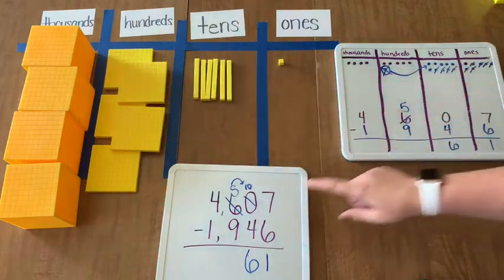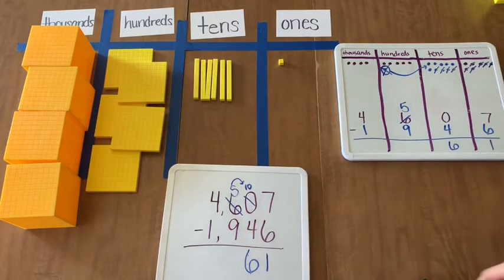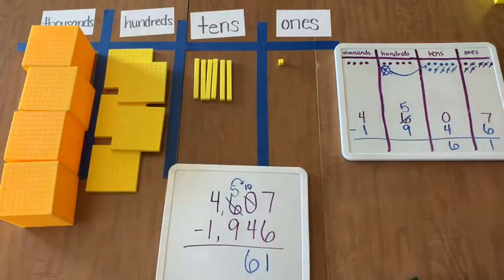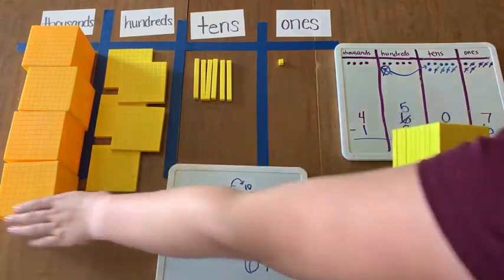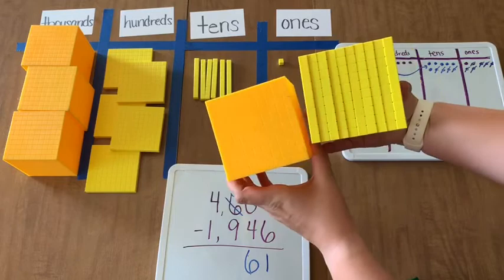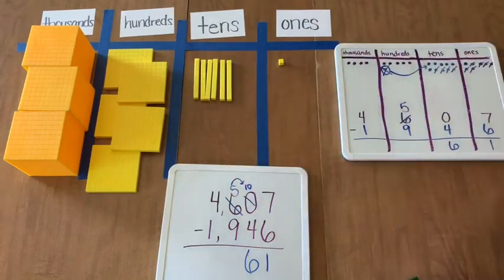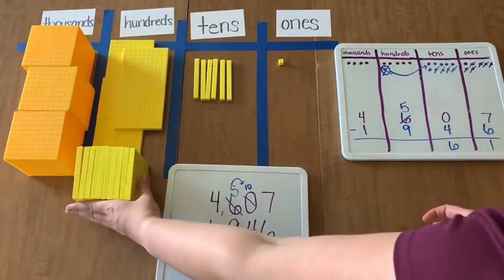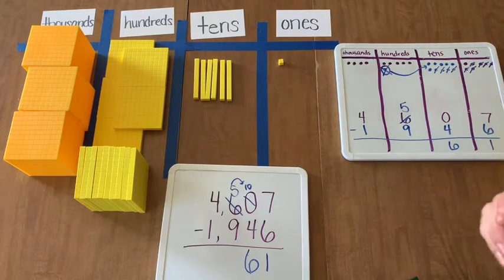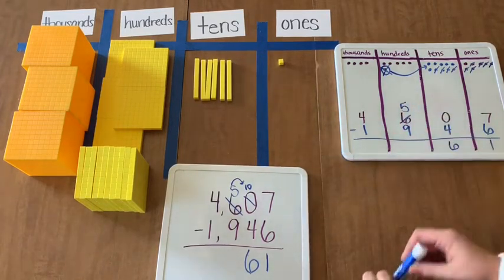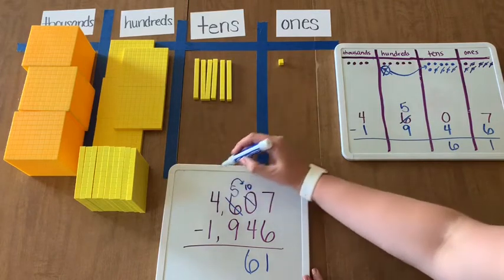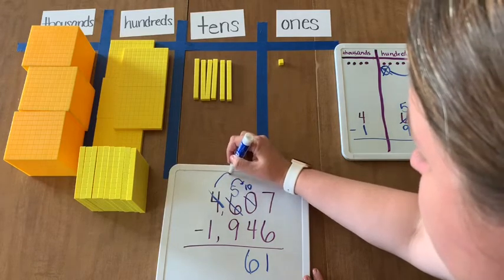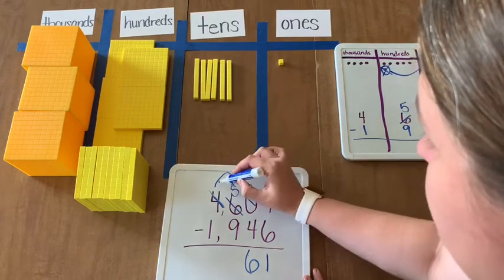In the hundreds, we cannot take away 9 hundreds. So I have to look and say, okay, well I can regroup from the thousands. So from the thousands, I'm going to take my thousand and break it down into 10 hundreds. Hopefully you can see that.